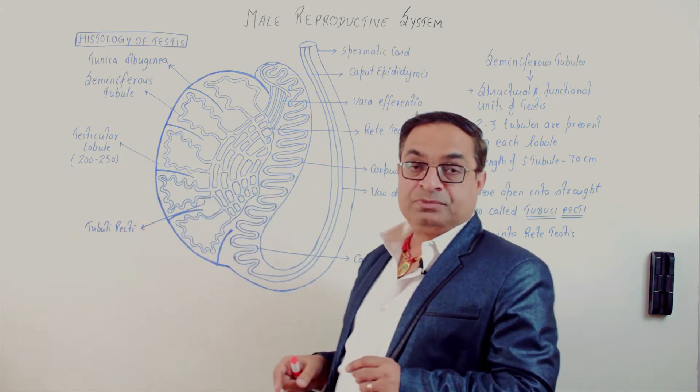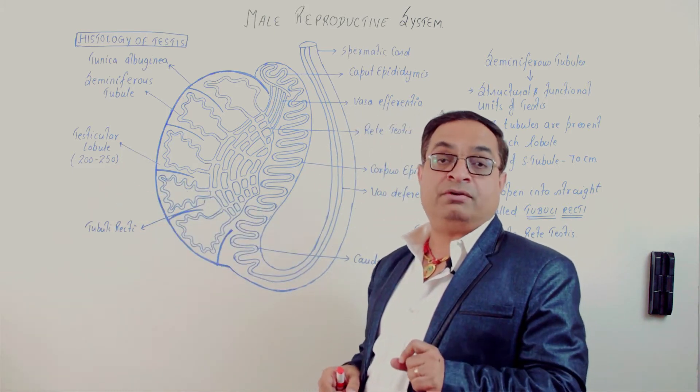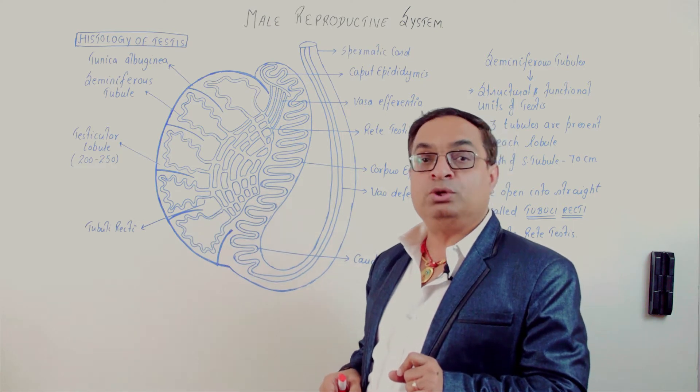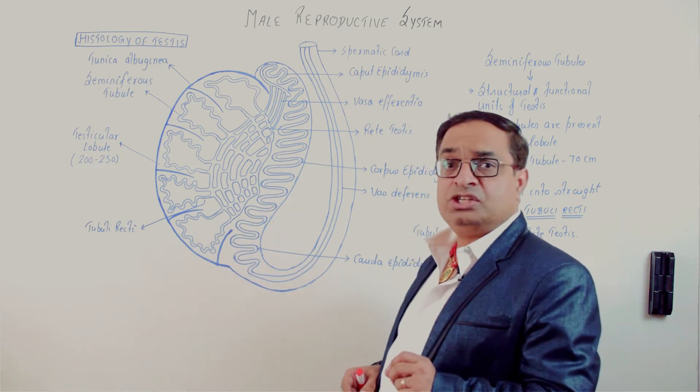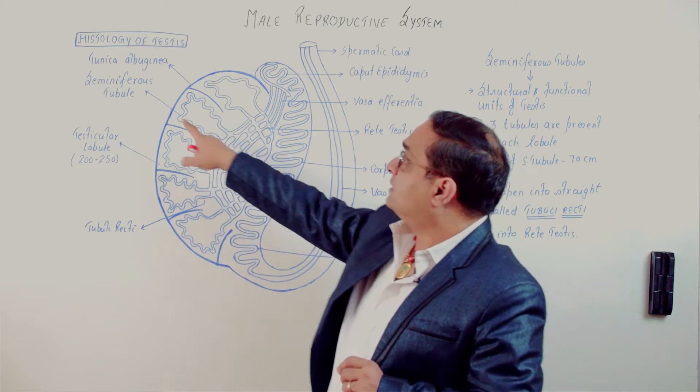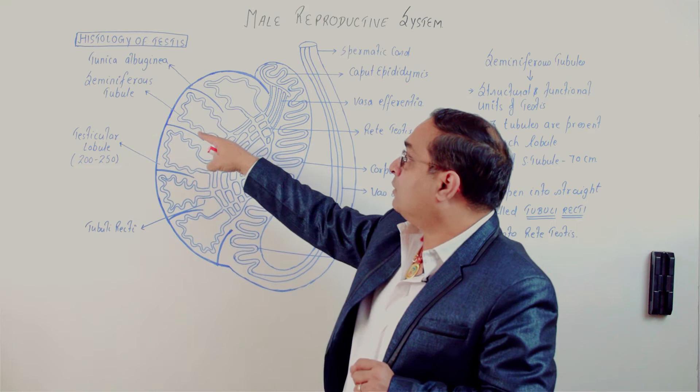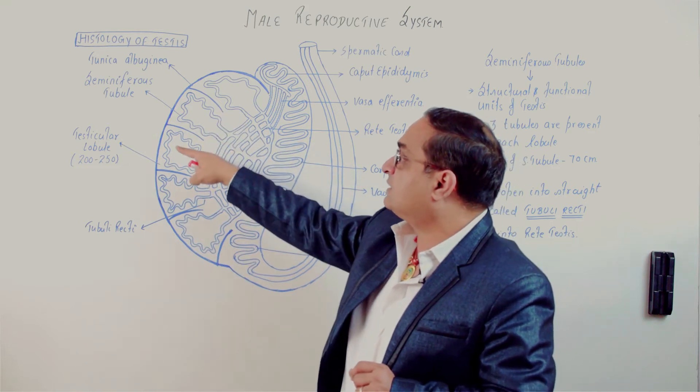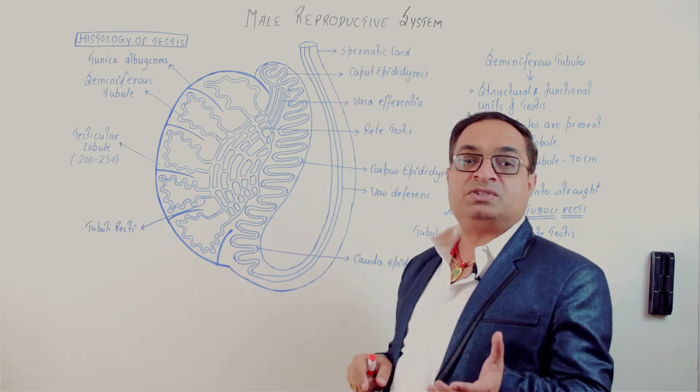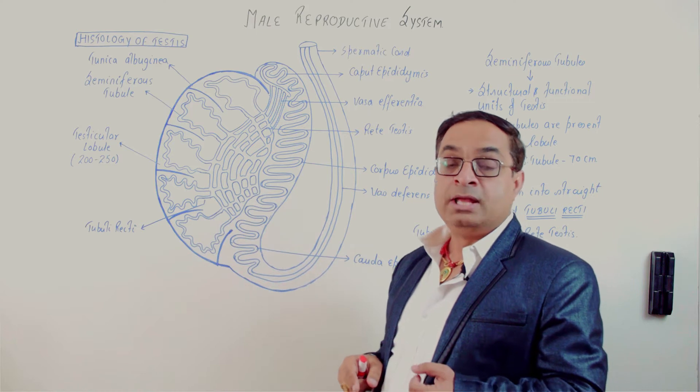Each testis has 200 to 250 lobules. Inside the testicular lobules there are seminiferous tubules. As you can see in the diagram, these highly convoluted tubules called seminiferous tubules are present inside each lobule. There are two to three tubules inside each lobule.